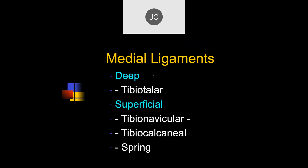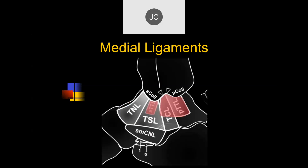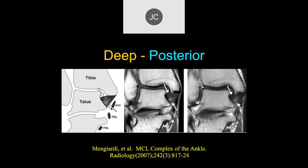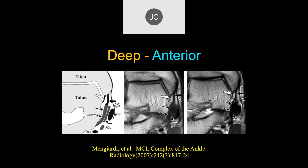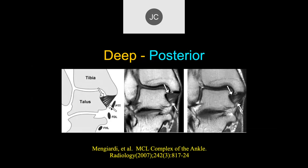Now let's talk about the medial ligaments. There's the deep tibial-talar ligament and the superficial tibial-navicular, tibial-calcaneal, and the spring ligaments. The deep ligament goes between the tibia and the talus and has a typical striated appearance — this is called the deep deltoid ligament. If you lose these striations, that typically indicates you've had a prior injury that healed with scarring. Not all that significant, but that's typically what it means.